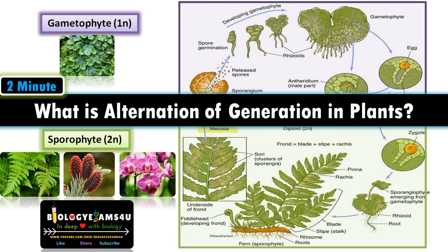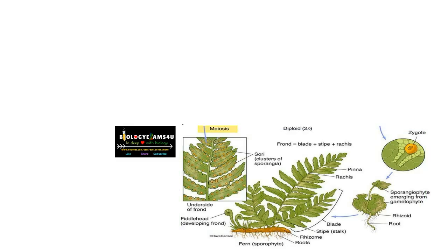Hi friends, welcome to biologyexams4u.com. Today's topic is a basic concept: what do you mean by alternation of generation in plants, and how gametophyte is different from sporophyte. Let's take the fern life cycle as an example to understand this concept.